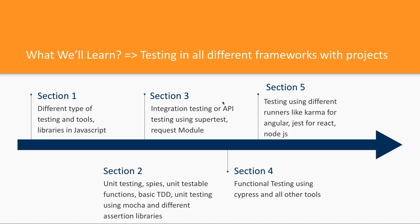Section one will start with different types of testing tools and libraries, and how to do the basic setup of unit testing by simply writing basic TDDs using Mocha, Chai, or Jasmine. We will talk about how you can create a stub or skeleton, and how you can create a spy using the Sinon library.